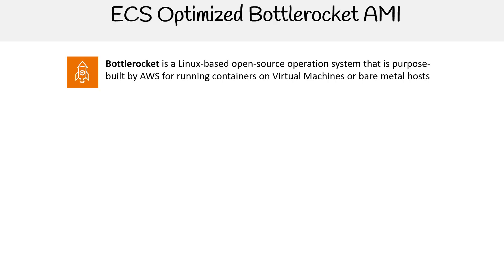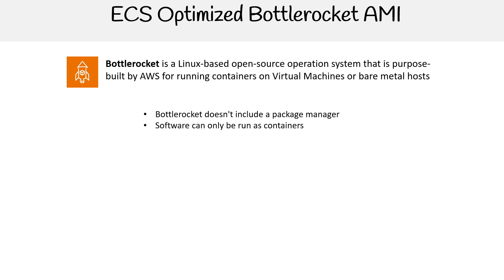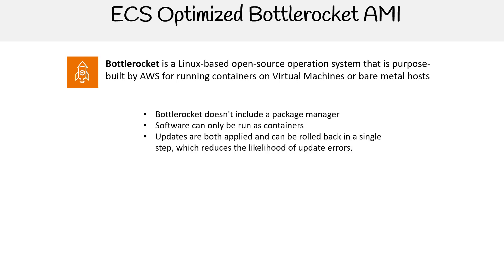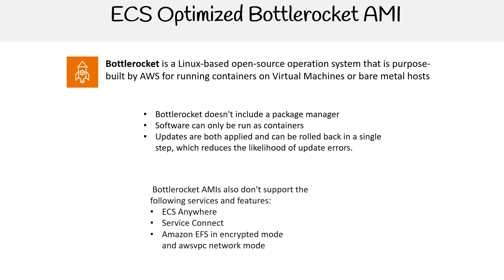There are also Bottlerocket AMIs. Bottlerocket is a Linux-based open source operating system purpose-built by AWS for running containers on virtual machines or bare metal. It's sometimes called a micro VM because it's really small. It doesn't have a package manager and can only run containers. Updates are atomically applied and can be rolled back in a single step, which reduces the likelihood of update errors. However, it doesn't support ECS Anywhere, Service Connect, EFS in encrypted mode, or AWS VPC network mode.